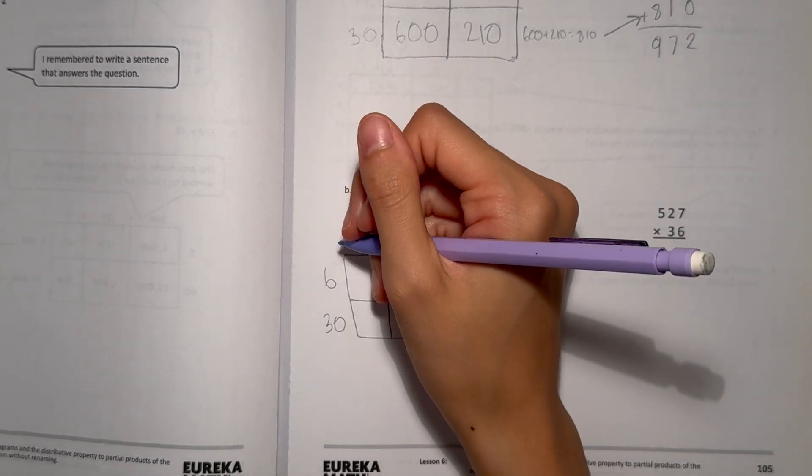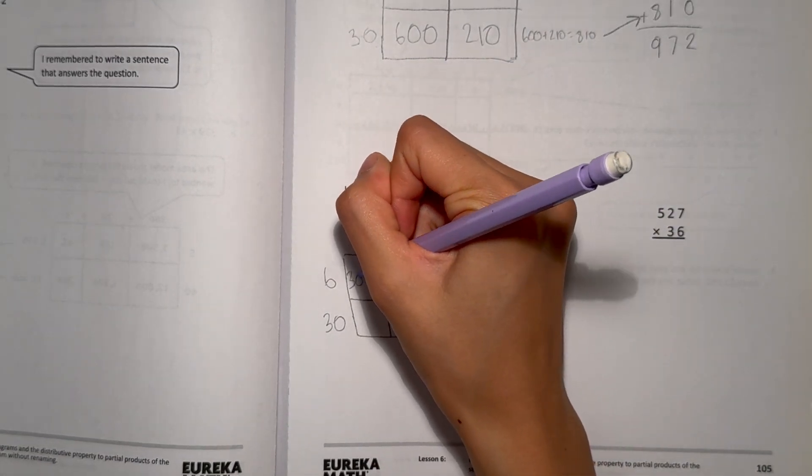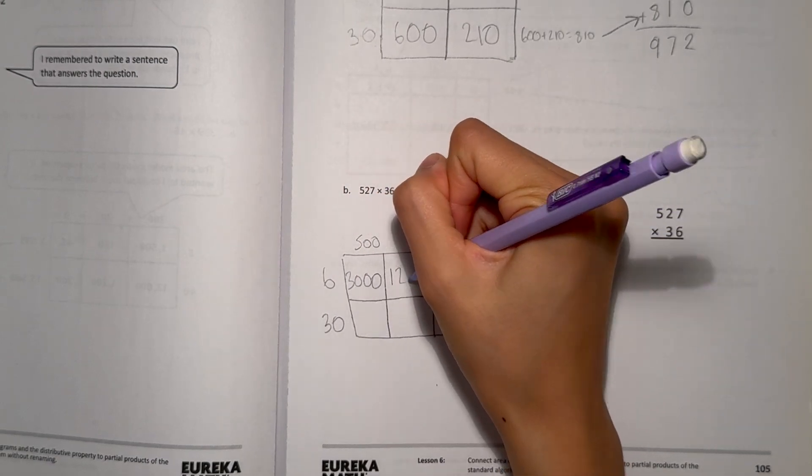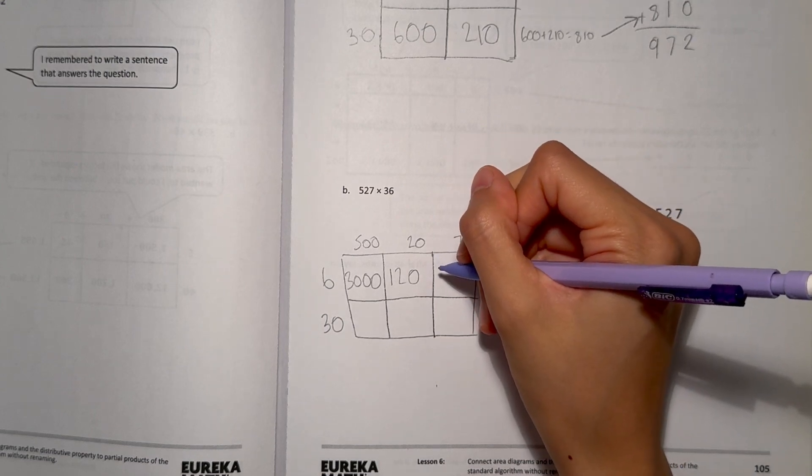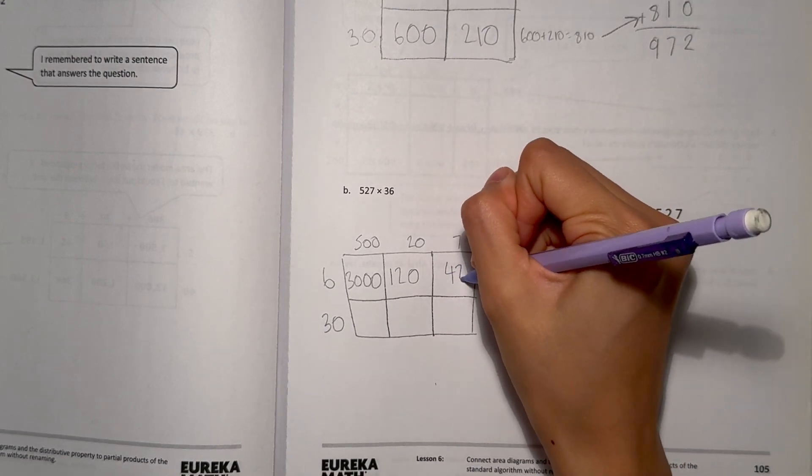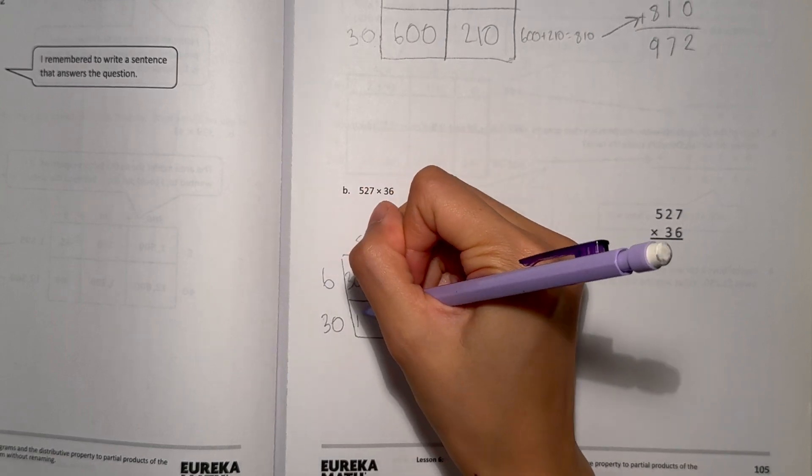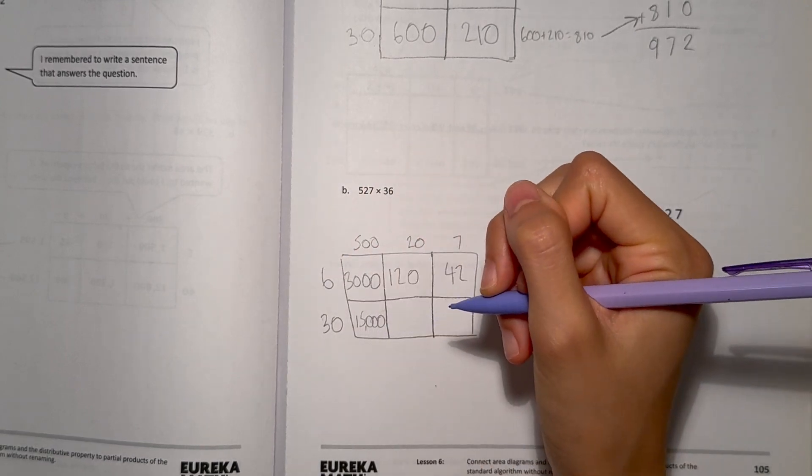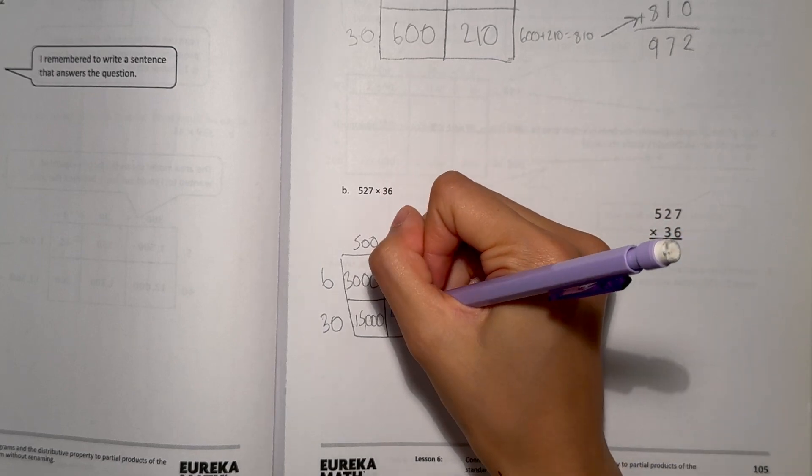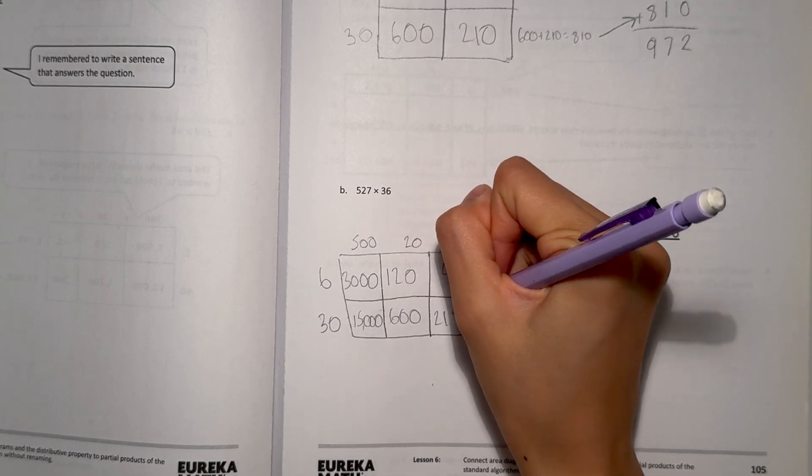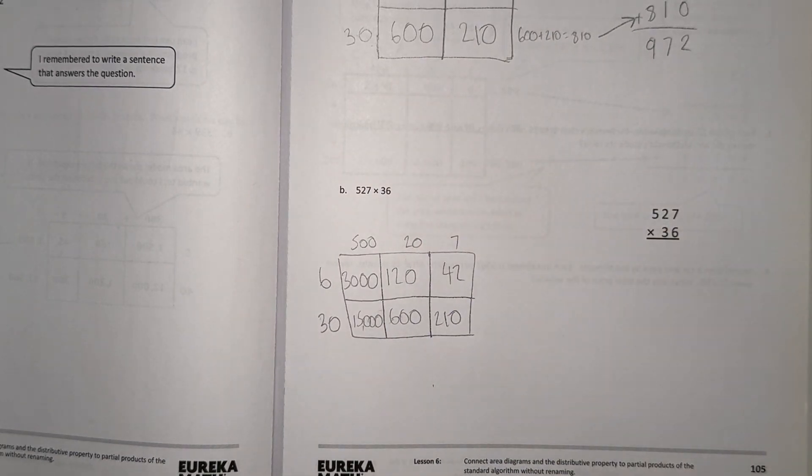Now let's multiply. 6 times 5 is 30. And add the 2 zeros. 6 times 2 is 12. And add the 0 at the end. And 6 times 7 is 42. 30 times 500. 3 times 5 is 15. And add the zeros. 30 times 20. That's 600. And 3 times 7 is 21. And add the 0 at the end.